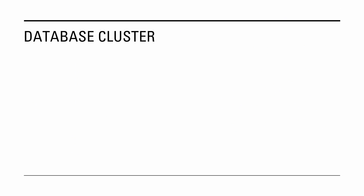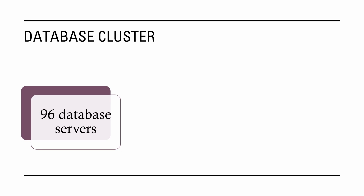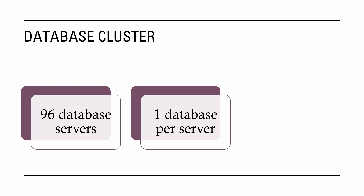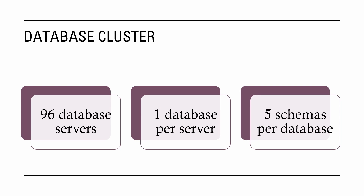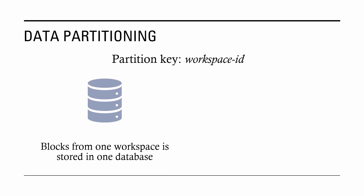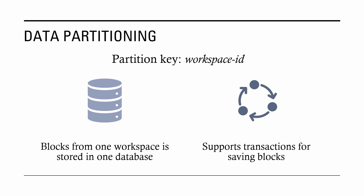As of July 2023, the database cluster consisted of 96 database servers. Each database server has one database that is logically partitioned into five shards, with each shard represented as a PostgreSQL schema. The data are partitioned into logical shards using WorkspaceID as a partition key, ensuring that all blocks belonging to one workspace are stored in the same database, which allows using transactions and guarantees consistency when storing and updating blocks.